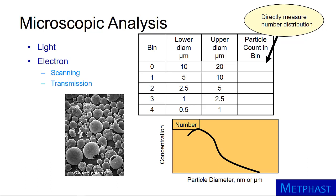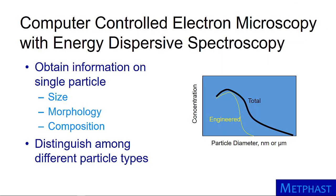From analysis of pictures, the number concentration of particles can be binned by particle size. The state-of-the-art in microscopy is computer control of the microscope with energy dispersive spectroscopy. The computer drives the microscope until a particle is found, then the particle size and morphology are assessed by image analysis. Finally, the composition of the particle is determined from emitted x-rays by energy dispersive spectroscopy. Such technology is exciting because we can figure out what portion of the size distribution is due to certain types of particles, such as engineered particles.